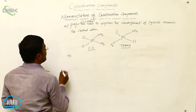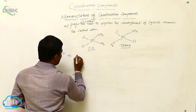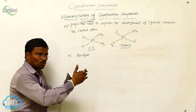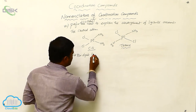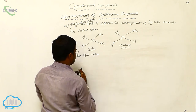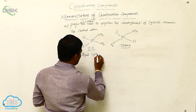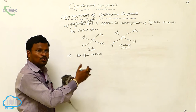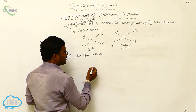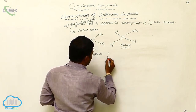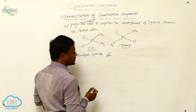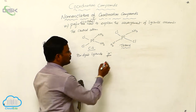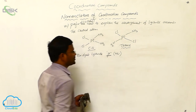The last topic under nomenclature of coordination compounds is bridged ligands. Sometimes ligands are present in between two metal atoms — such ligands are called bridged ligands. In the case of bridged ligands, we have to use 'mu' (μ) as a prefix word before the name of the bridged ligand while writing the name for that compound.